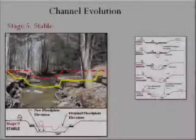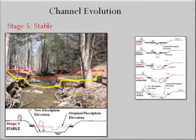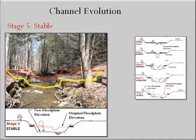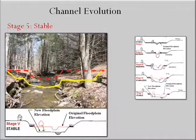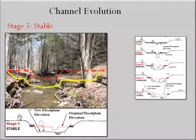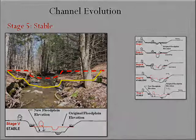Stage five of the channel evolution process sees a return to equilibrium or stability, brought about as the gravel bars grow high enough to effectively narrow and deepen the channel, creating sufficient flow power to transport the sediment load during moderately high flows and providing floodplains for energy dissipation during higher flows. The river is once again stable.